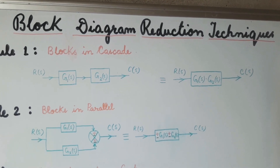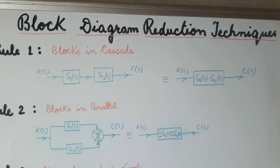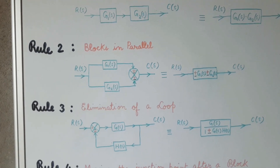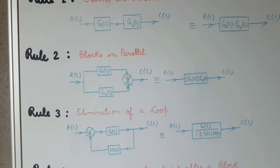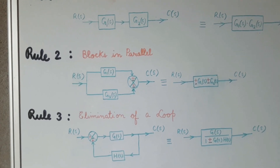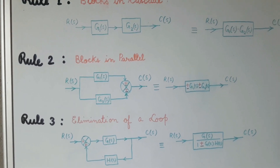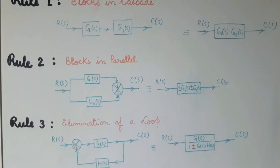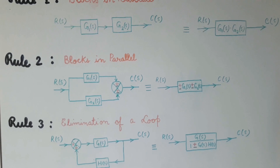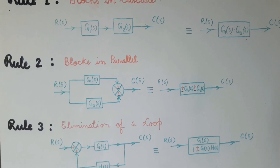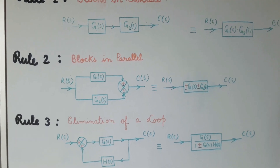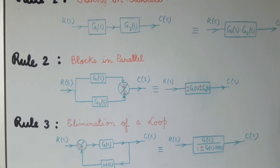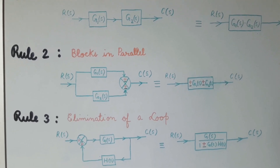So we have replaced the blocks by a single block G1(s)·G2(s) between the input R(s) and the output C(s). The second rule says that if the blocks are connected in parallel to each other, then we can replace those two blocks by a single block between the input and the output, and the value of that block will be equal to ±G1(s) ± G2(s).